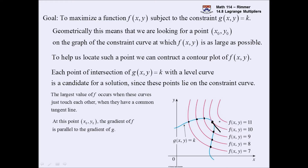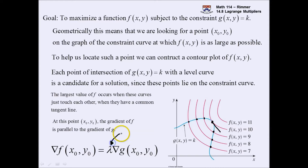We can think of the tangent as a tangent vector, and 'common' just means they should be scalar multiples of each other — the vectors associated with the tangent should be scalar multiples of each other. So the gradient of f should be some scalar multiple of the gradient of g. They are parallel at that point, and this is the equation that drives Lagrange multipliers. The scalar multiple is denoted by the Greek letter lambda. So the gradient of f equals lambda times the gradient of g, and this equation governs your whole solution method.